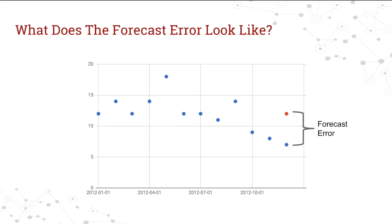Really, all these errors are doing is figuring out the difference between the actuals and the forecast — that's why we use the terms 'actuals' and 'forecast,' especially in finance departments. If you look at the screen, there's a red dot and a blue dot, and that space in between is your error. You're just figuring out how big that space is. Now we're going to go into R and see how to use the accuracy function to apply these error metrics to our data sets and the models we've already worked with.